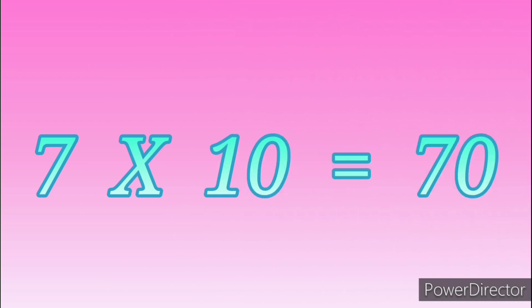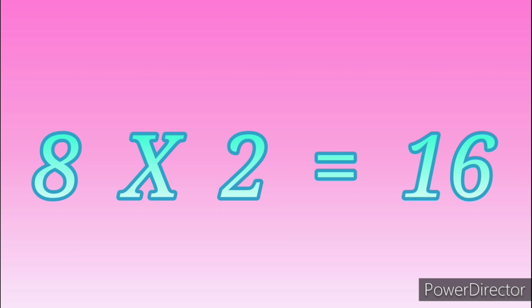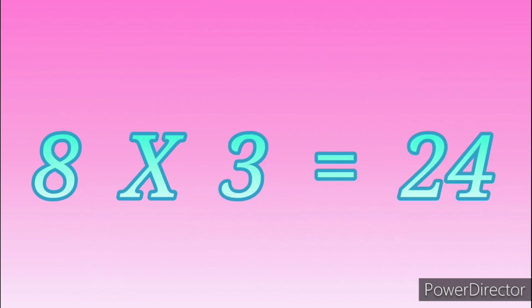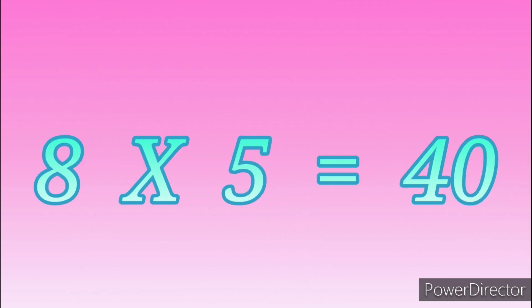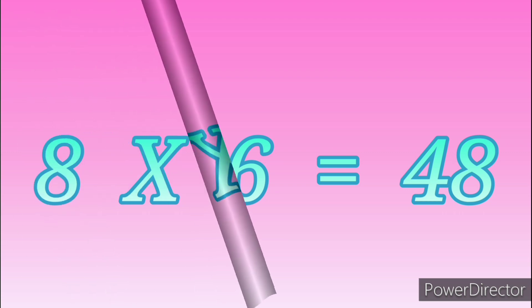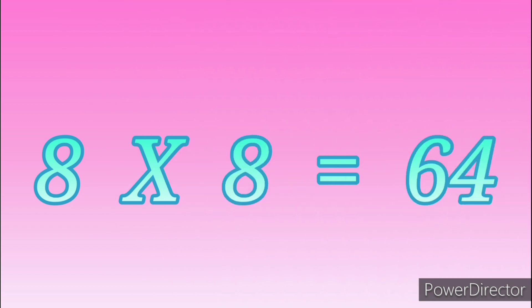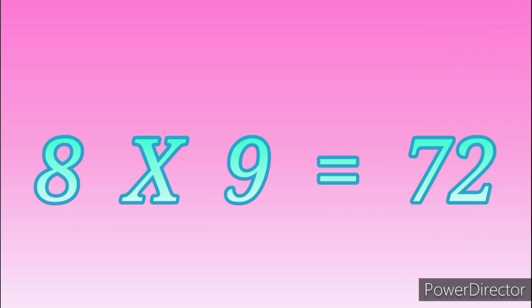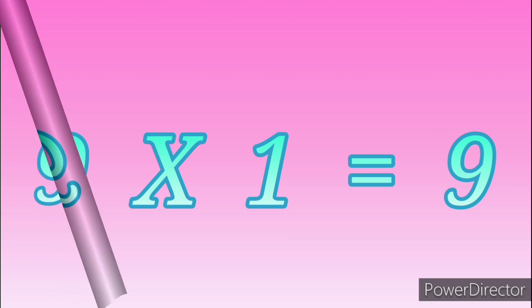7 tens are 70. Table of Eight: 8 ones are 8, 8 twos are 16, 8 threes are 24, 8 fours are 32, 8 fives are 40, 8 sixes are 48, 8 sevens are 56, 8 eights are 64, 8 nines are 72, 8 tens are 80.